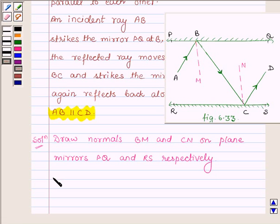This implies BM is perpendicular on PQ, CN is perpendicular on RS, and we are given that PQ is parallel to RS.